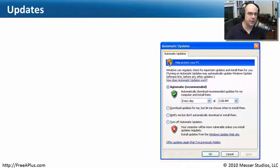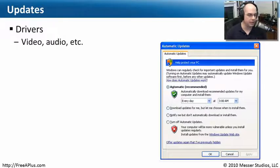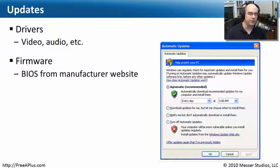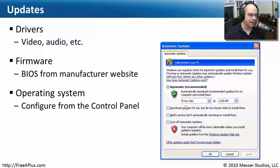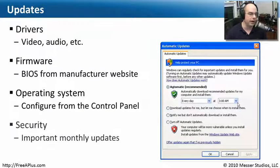From a hardware and operating system perspective, updates become incredibly important. There are driver updates that may occur at any time — new printer drivers, video drivers, keyboard and mouse drivers. The firmware of your system, the BIOS, doesn't update too often, but if you run into a bug or a new operating system comes out, you may want to upgrade the BIOS from the manufacturer's website. The operating system generally gets updates all the time, usually at a minimum of monthly, and automatic updates can be configured right from the control panel.